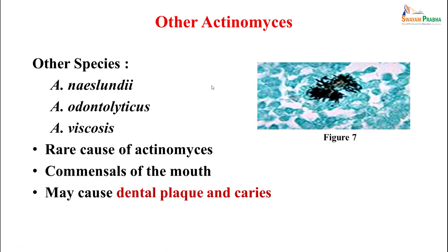Other actinomyces species — actinomyces naeslundii, odontolyticus, viscosus — are rare causes of actinomycosis. They are common commensals of the mouth and may cause dental plaque and caries. They are again gram-positive branching filaments.